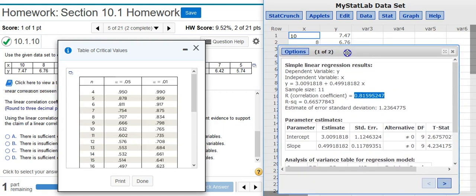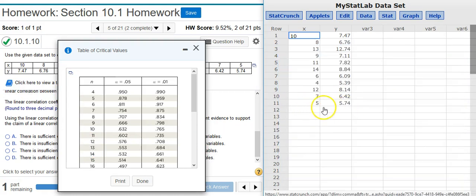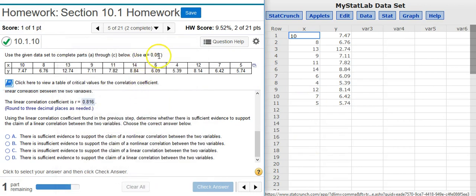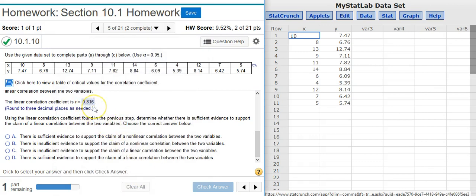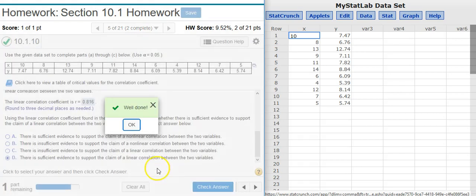Notice here, we have 11 pairs in our sample. So we have 11 pairs and we were asked earlier to use 5% for our alpha level. So 5% alpha matched with 11 pairs of data gives me a critical R value of 0.602. The R value that we obtained is 0.816. That's greater than the critical R value. Therefore we have sufficient evidence to support a claim of linear correlation. I select the appropriate answer. Well done!